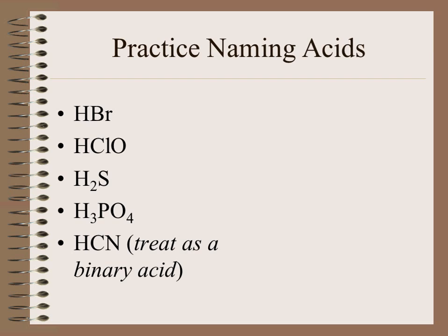The first example here, HBr, is a binary acid — only two element symbols — so we're going to start with the hydro prefix. The stem comes from the anion, which is bromine, and then we put -IC acid on the end, so HBr would form hydrobromic acid.